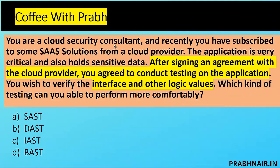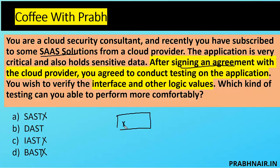Next question: You are a cloud security consultant and have subscribed to a SaaS solution — meaning someone developed the software as a service and you consumed it, like GoToMeeting from a cloud provider. The application is critical and holds sensitive data. After signing an agreement with the cloud provider, you wish to verify the interface and other logic values. Which kind of testing can you perform most comfortably? In SaaS you need access to source code for SAST, so A is removed. For IAST you need to integrate, so C is removed. There's no such thing as BAST, so the only remaining option is DAST.